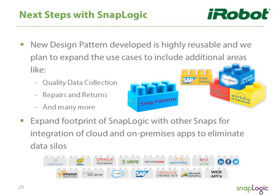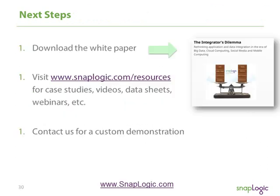The next steps at iRobot are around more and more reuse, expanding use cases into other areas, and expanding the footprint into SaaS and on-premises integration requirements. It's a big vision of bringing these things together and delivering a single platform for enterprise organizations. We're excited about the momentum we've seen over the past six to eight months with our new platform, and you're going to hear much more about us in the coming months. Vance, I'll hand it over to you for questions.